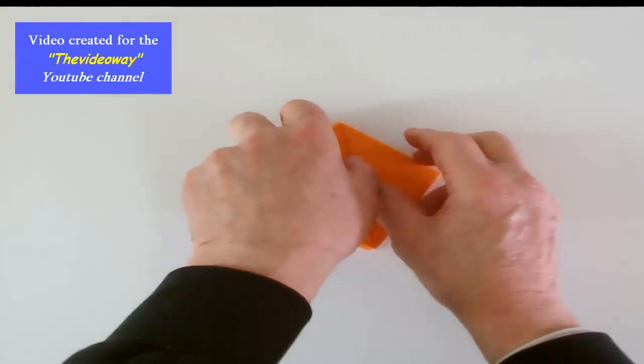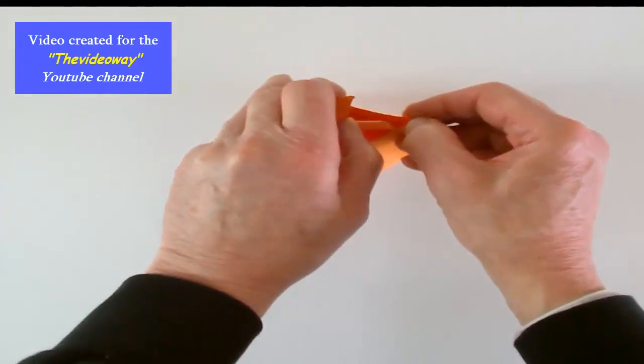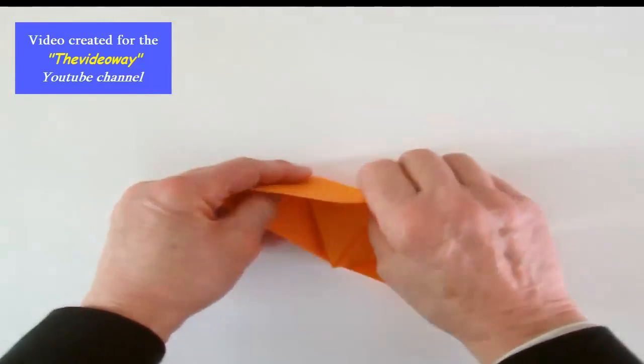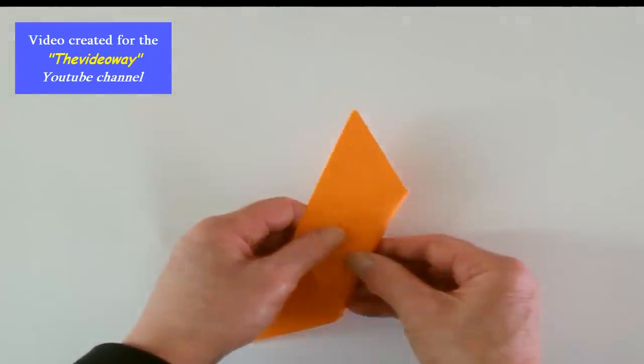Now take these two folds at the top and gently ease them apart. And as you ease them apart, use your finger to make sure that you don't get any unwanted creases.